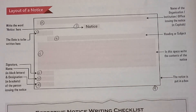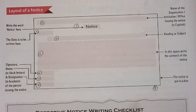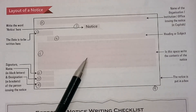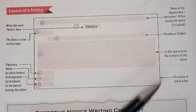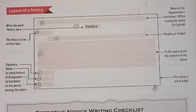And children, if the notice carries five marks, there are nine things — except the body — all the things are of half a mark each. If you miss one thing, that means you are losing half a mark.